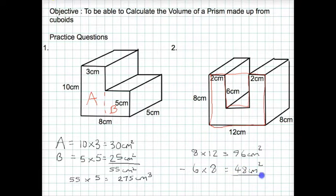So now we need to subtract the 48 from the 96, which of course leaves us with 48. So our cross sectional area here is 48 centimeters squared. And then all we have to do is multiply the 48 by the 8. So we do 48 multiplied by 4 gives us 384. And of course this is centimeters cubed.